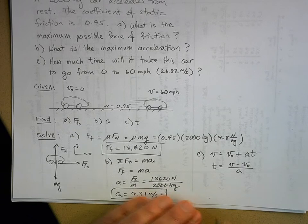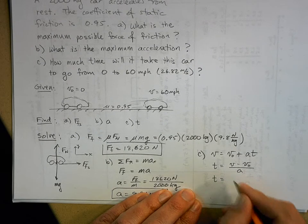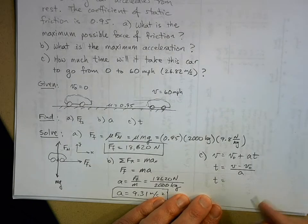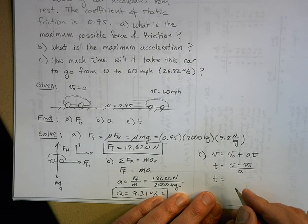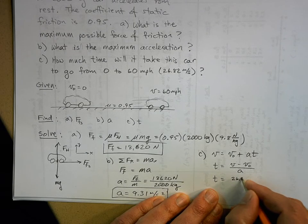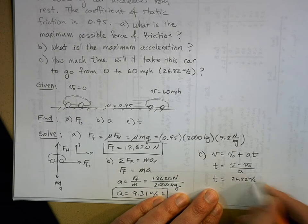So solve for time. Now, the final velocity is 60 miles per hour, but you can do the conversion. It's actually 26.82 meters per second.